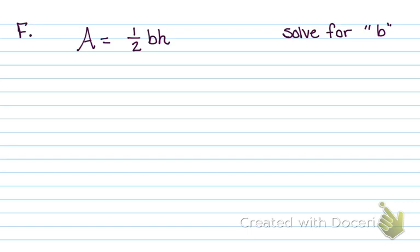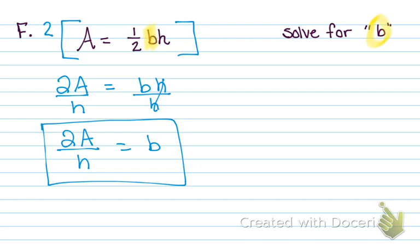Alright, let's go to F. I want you to try to solve for B — pause it and see how you do. Again, I had a fraction, so I will clear it. I use 2, and 2 times A is 2A. Then 2 can go into 2 once — 1 times 1 is 1, and that whole thing is being multiplied by BH, so 1 times BH is just BH. Then divide by H, and I'm left with B alone, which is what I'm solving for. So 2A divided by H equals B — that's my answer.